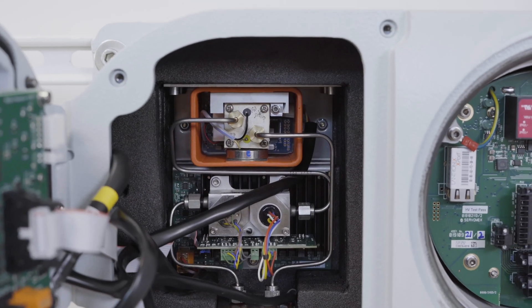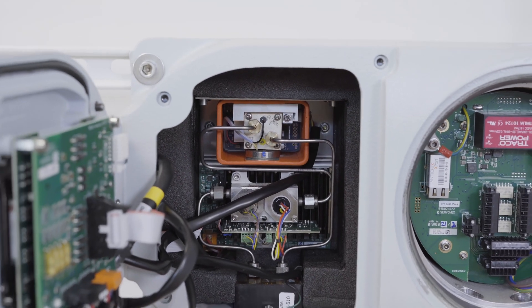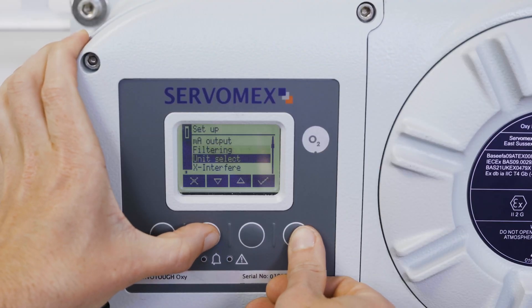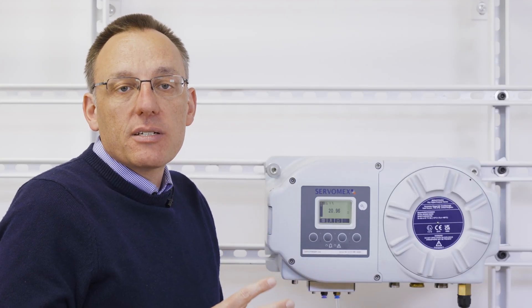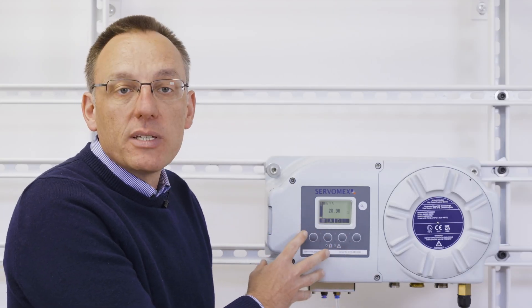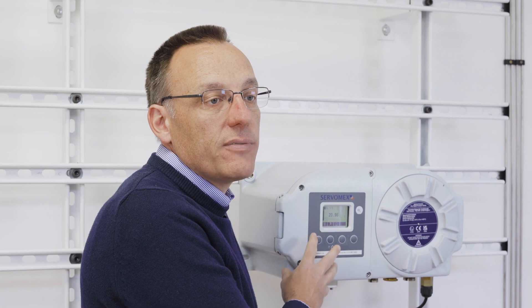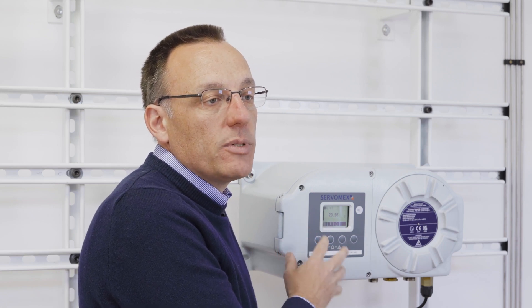The sample compartment contains intrinsically safe electronics including the LCD display and the interface keypad. The paramagnetic transducer and associated sample pipework is all contained within. The design minimizes the internal pipework to the transducer delivering a fast measurement response time with a T90 typically less than 6 seconds. The sample compartment is also thermally heated to approximately 65 degrees centigrade as standard for optimal measurement performance.